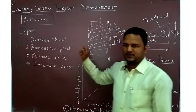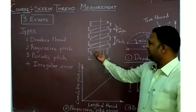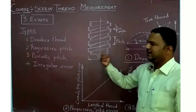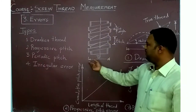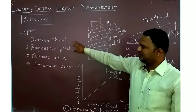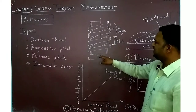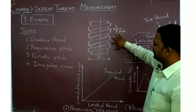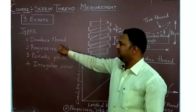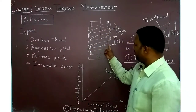The drunken thread error — from the name itself — can be understood if we plot the graph of a thread profile or helix. From the figure, we have diameter and pitch. Drunken thread error and all these errors are pitch errors. The pitch is the linear or axial distance from the corresponding thread profile. You cannot detect drunken thread error by directly measuring the pitch; it is an error of the helix.